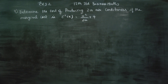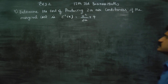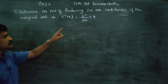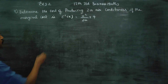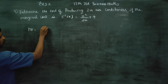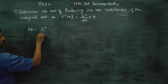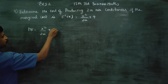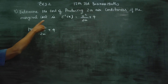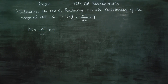Dear Tools Standard Business Max students, in exercise number 3.2, determine the cost of producing 200 air conditioners if the marginal cost is given. MC is equal to x squared by 200 plus 4. We need to find the cost for producing 200 air conditioners.